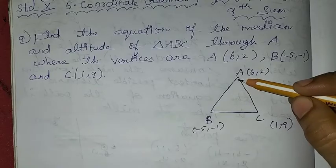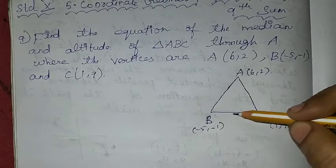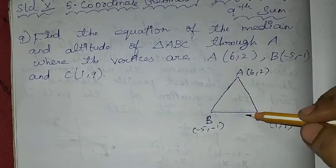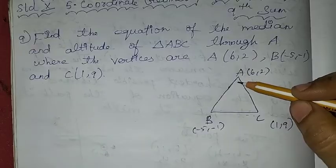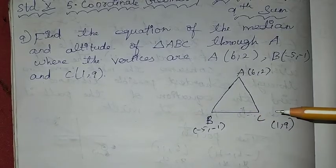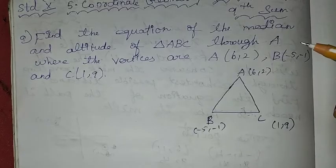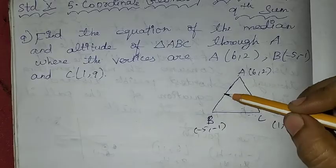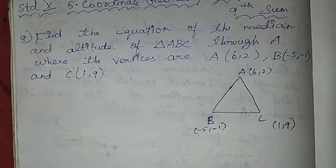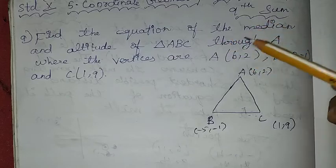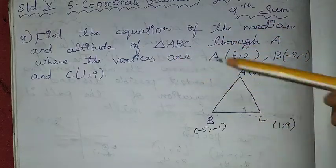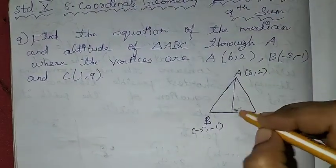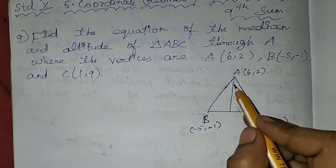We will be talking about triangle ABC. Through A — which refers to the median and the equation of the median and altitude of triangle ABC through vertex A.